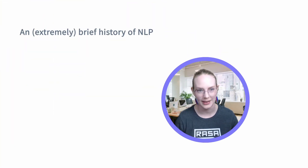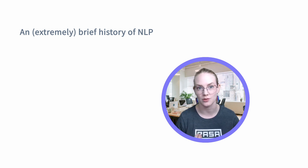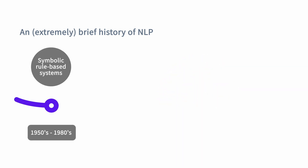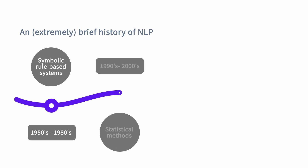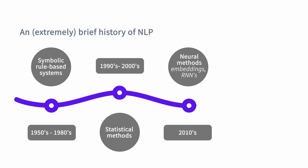A quick history of natural language processing, which is the field of using computers to interact with text data produced by humans. Way back in the 1950s through 80s, there was a real focus on symbolic rule-based systems — ELIZA was one of the earliest chatbots and was completely rule-based. Then in the 90s and 2000s, the field shifted to more statistical methods, basically counting units of language, usually words. And then in the 2010s, there was another shift to deep learning models: neural networks, in particular embeddings, recurrent neural networks, and LSTMs.